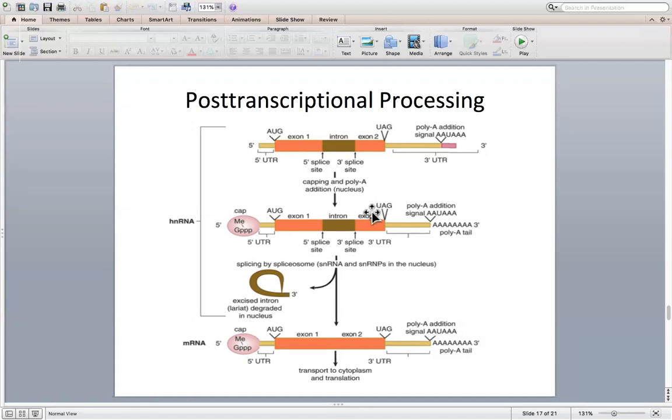The function of that cap at the 5' end is primarily to protect the mRNA from degradation, but it's also going to be what the ribosome can recognize at the binding site. So it has two functions, but primarily it's going to keep it from degrading.